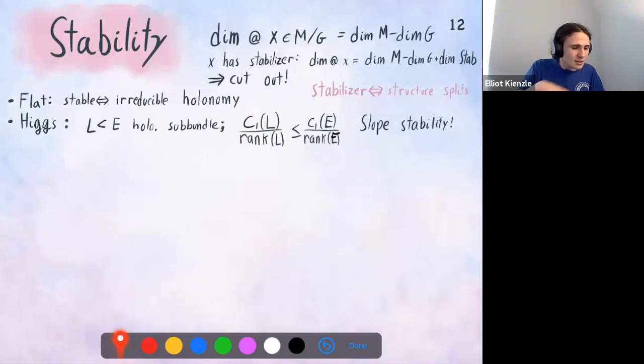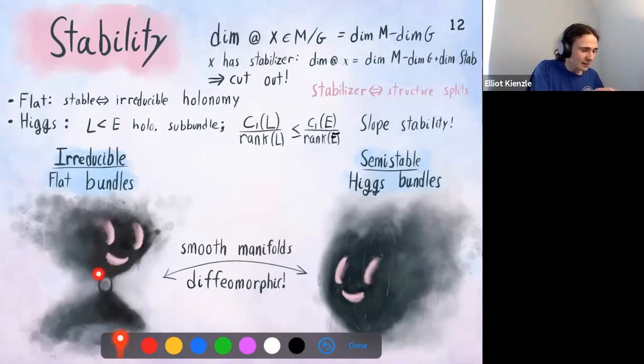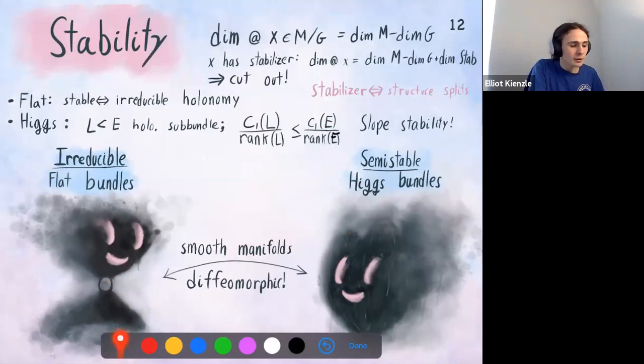Let's look at what these new manifolds actually look like. On the irreducible side, imposing irreducibility gets rid of the singular point of the variety. In the semi-stable case, we got rid of all the bad parts. Now they are actually smooth manifolds and they are indeed diffeomorphic. This is the proper statement of the non-abelian Hodge correspondence — when there are singularities they mess things up, but it's nice to know this is there and it gives us security.